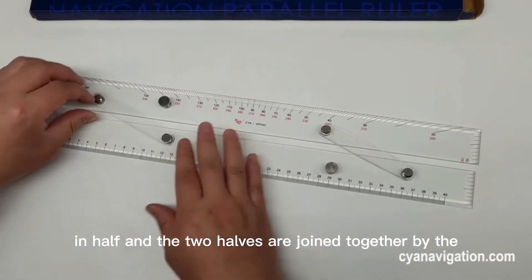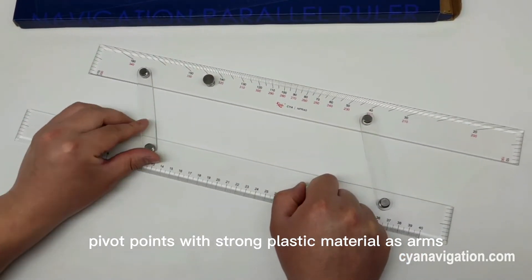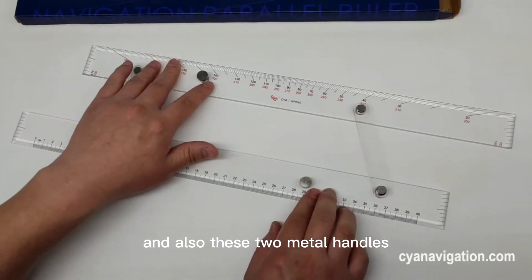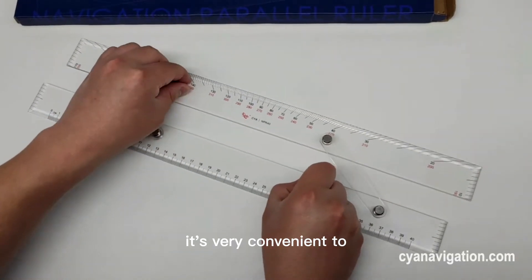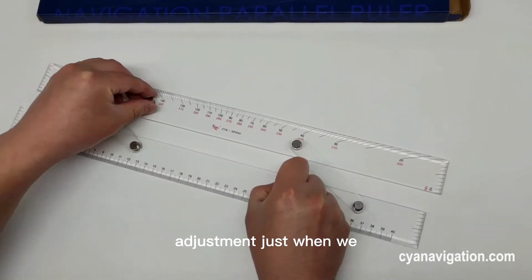by the pivot points with strong plastic material at the arms and also these two metal handles. It's very convenient for adjustment.